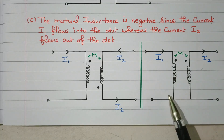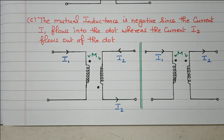So in this video we discussed the dot rule or dot conversion. Mutual inductance is positive or negative based on the current direction. Subscribe to the channel for more videos and notifications. Soft copy of this material is available in the drive; the link is given in the description box. Thank you for listening.